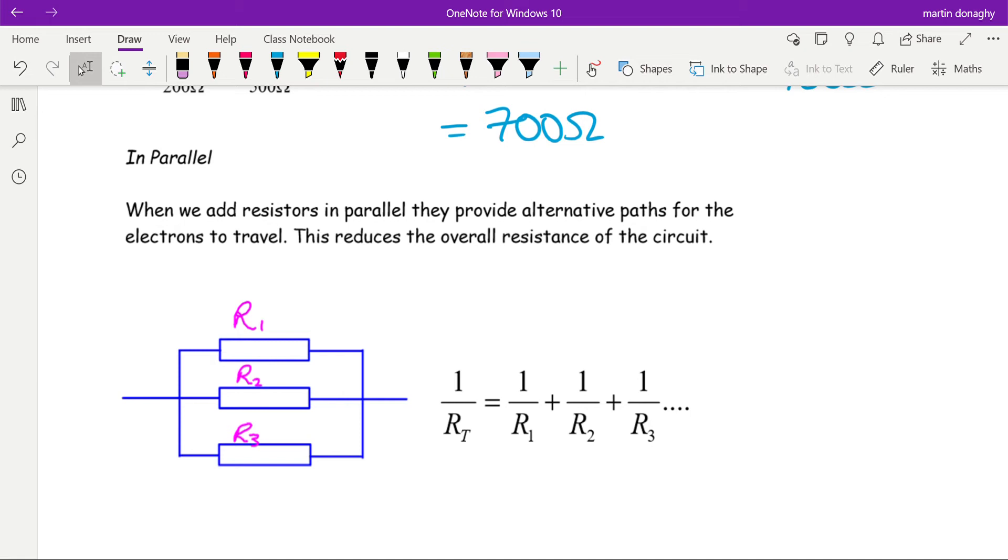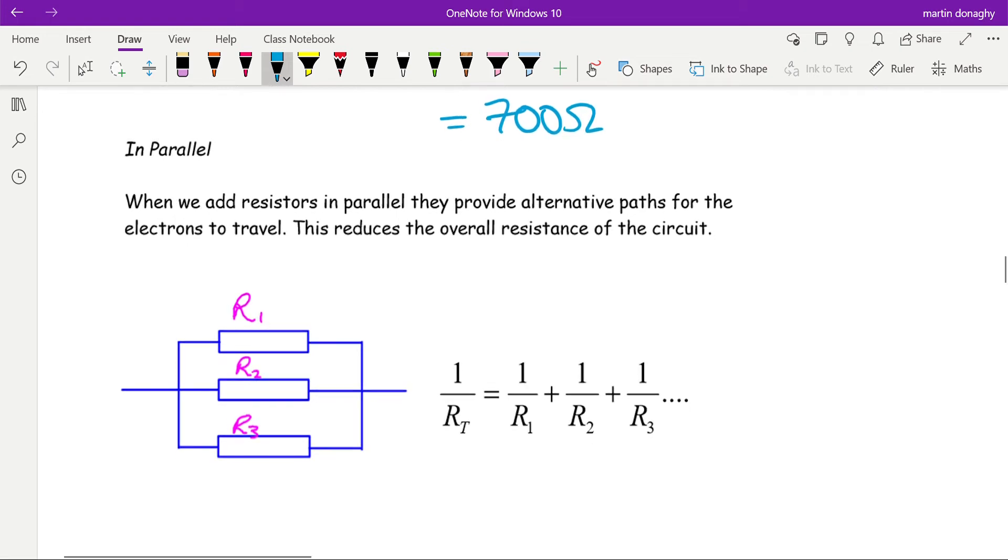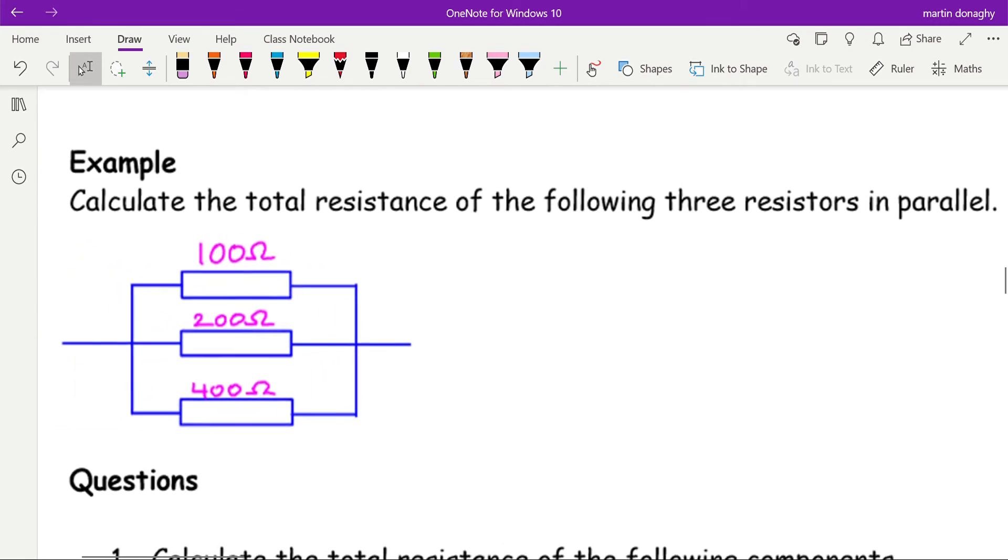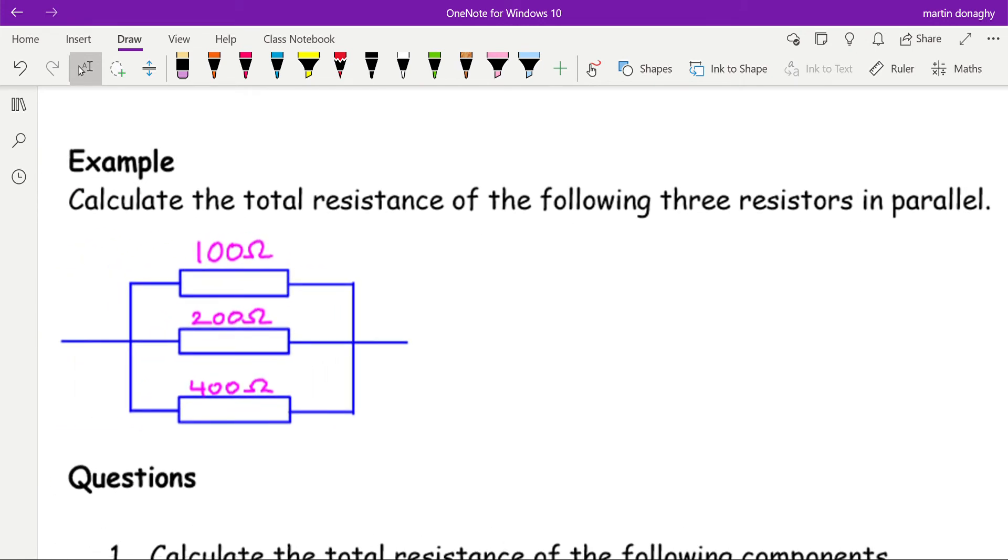What we do is we add the reciprocals. So if I have these three resistors, one over my total resistance equals one over R1 plus one over R2 plus one over R3. This is easier explained by an example, so let's look at this example. Calculate the total resistance. Well, we have three resistors which are parallel, so we're going to add them by adding the reciprocals.